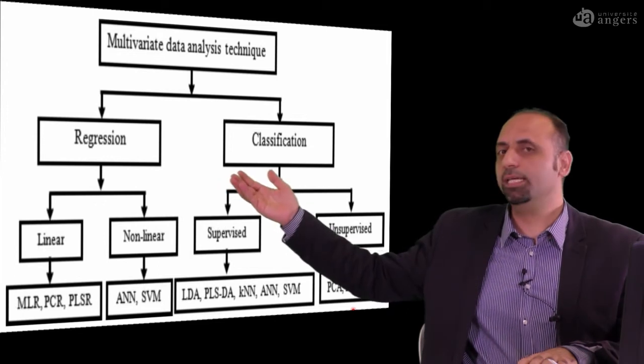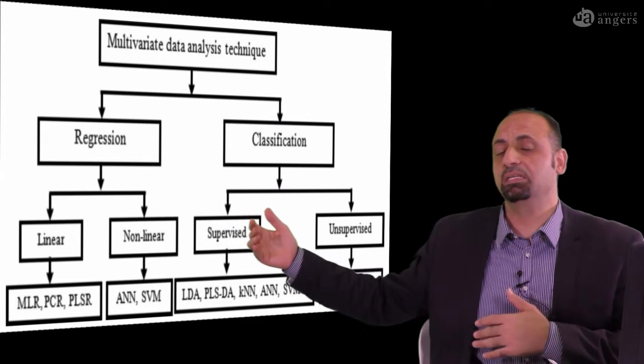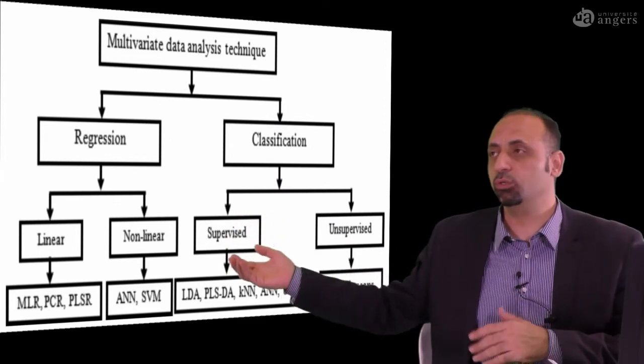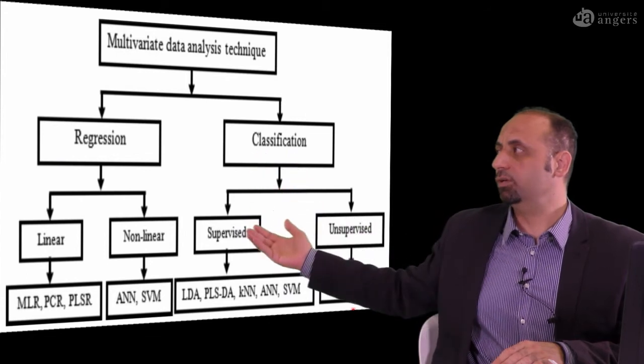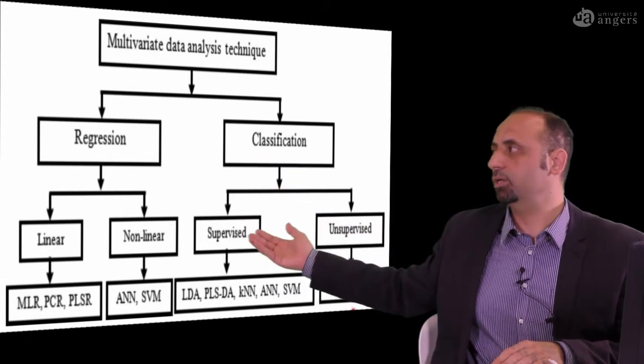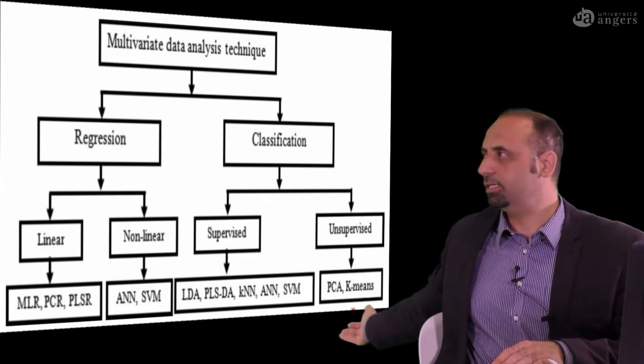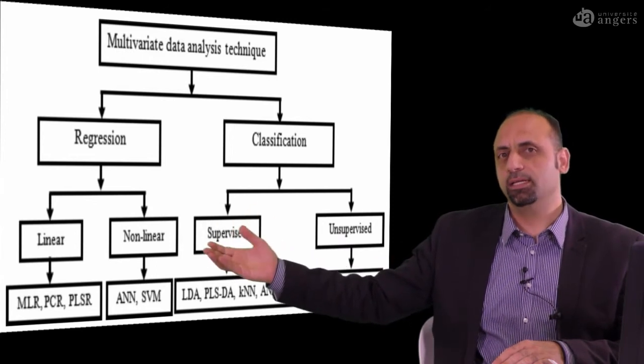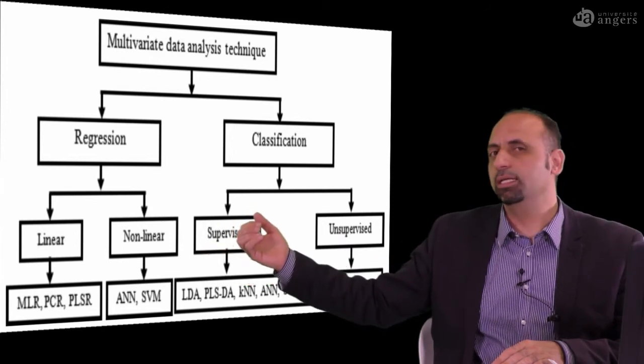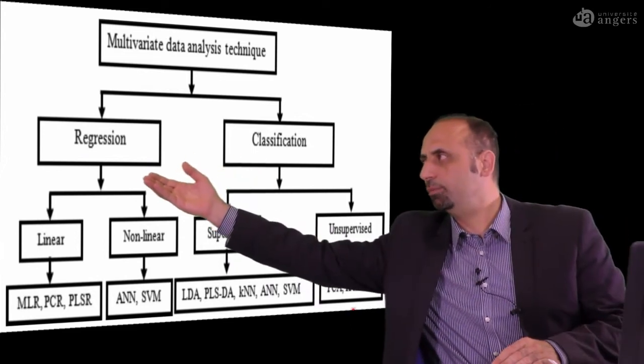So if you need to make classification to see whether your object is good or bad, diseased or not diseased, damaged or undamaged, you need to use classification models. The classification models could be supervised or unsupervised. There are a lot of unsupervised techniques and some supervised techniques. If you need to predict something inside your sample or product, you need to use regression models.